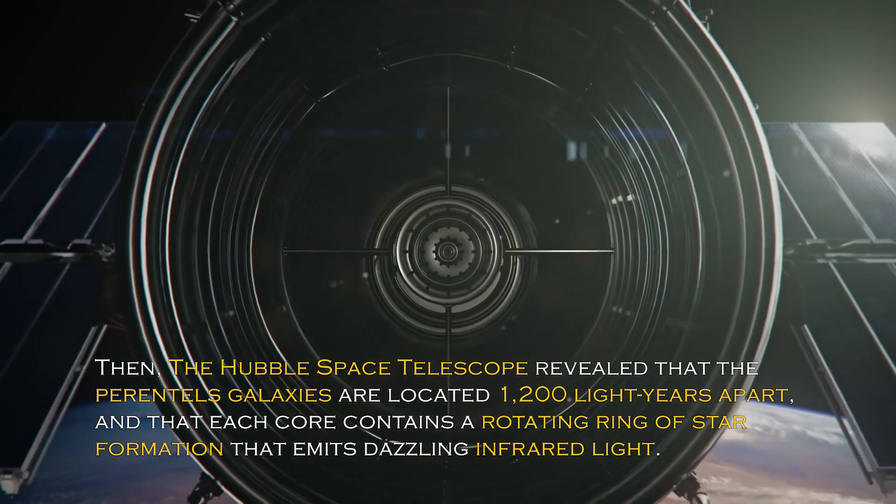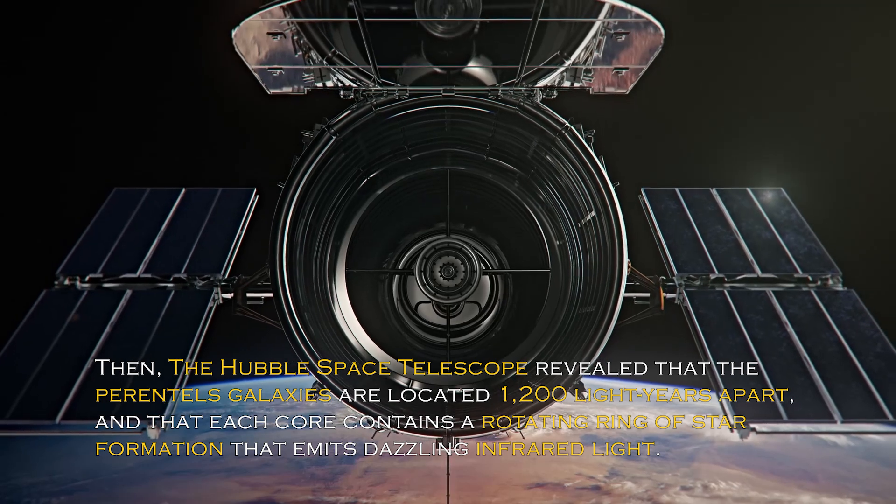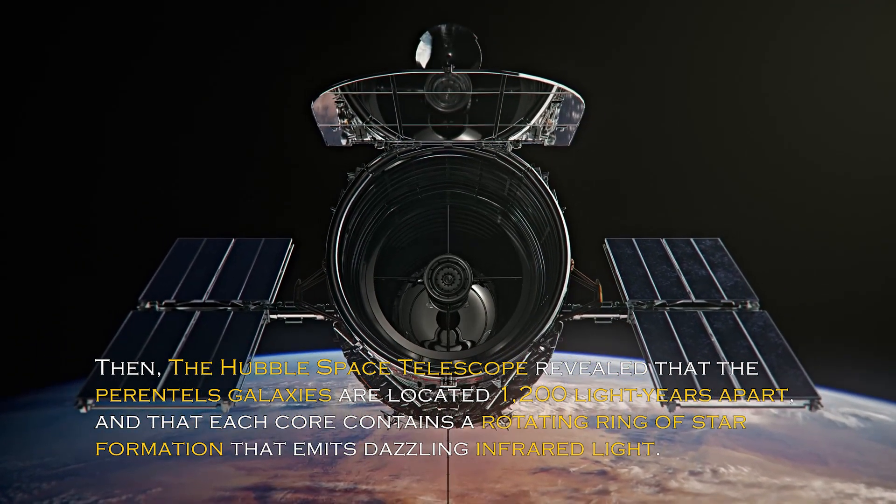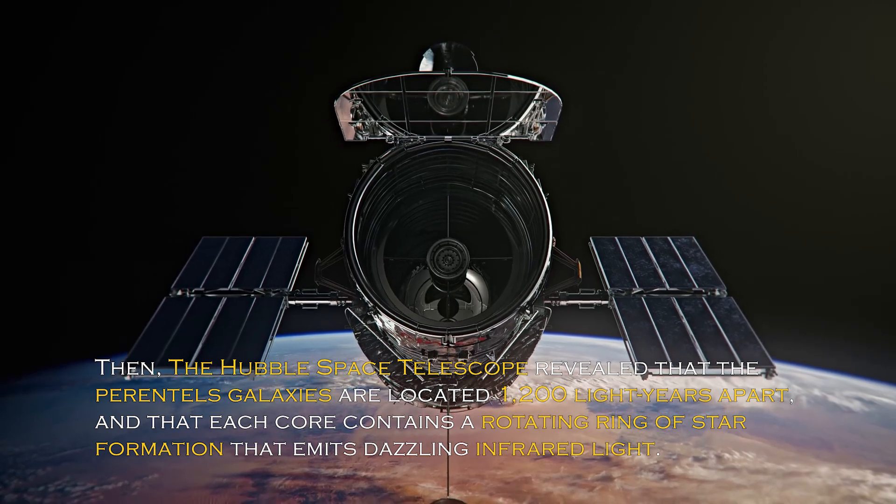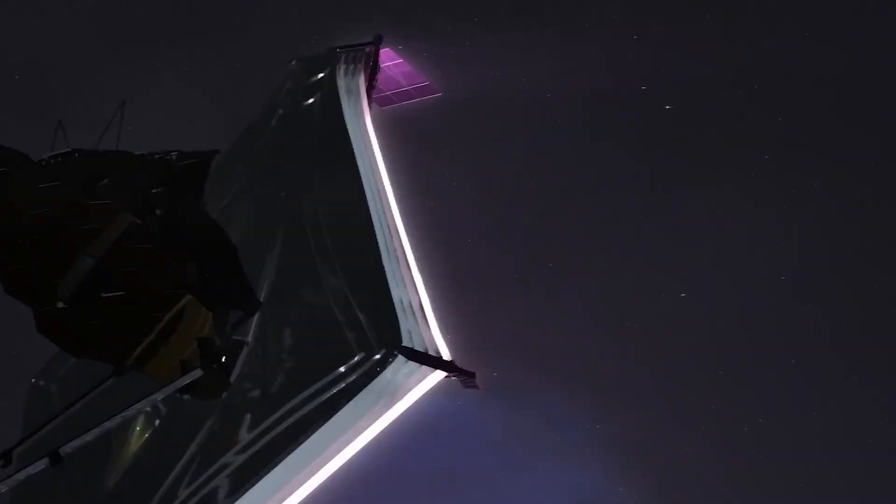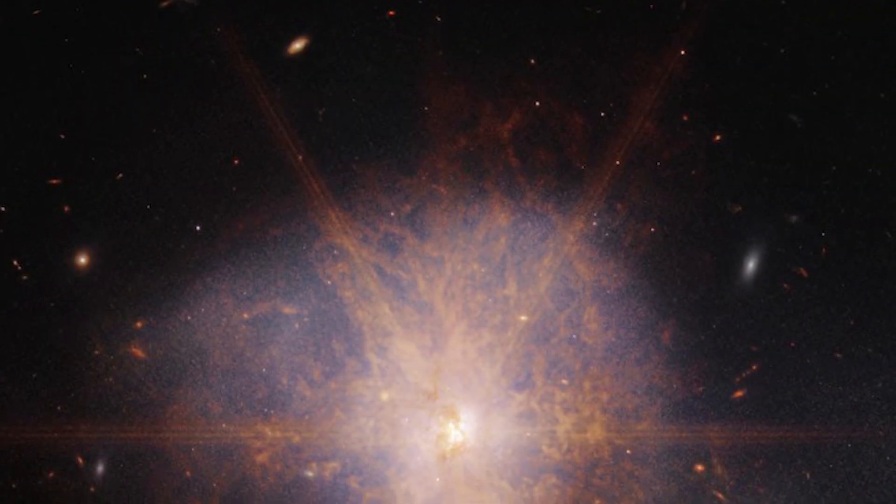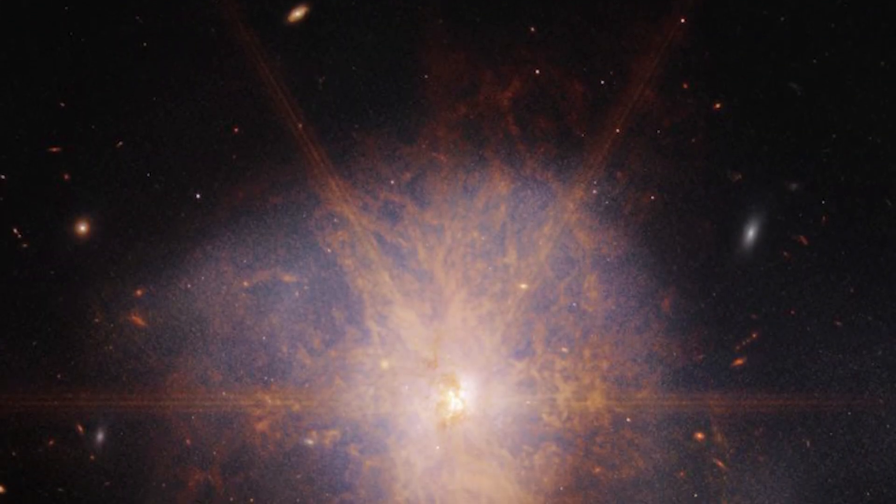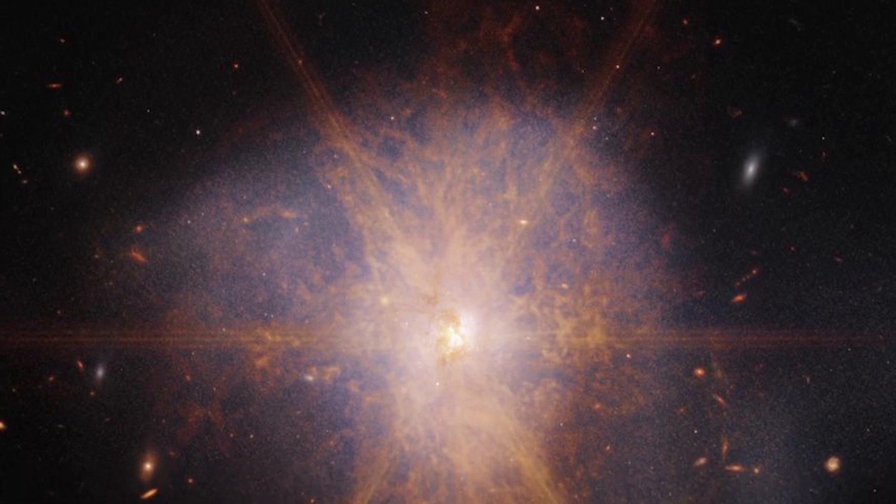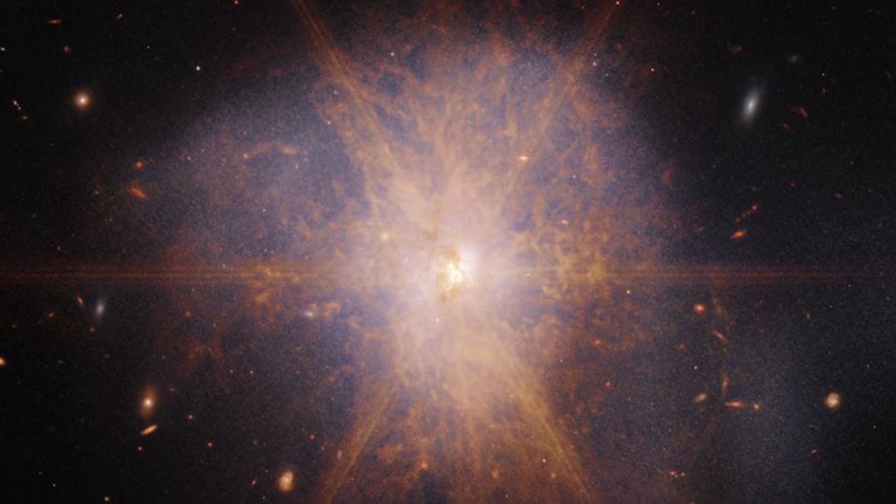Then, the Hubble Space Telescope revealed that the parent galaxies are located 1,200 light-years apart, and that each core contains a rotating ring of star formation that emits dazzling infrared light. The latest views from the James Webb Space Telescope show an impressive galactic merger of the two galaxies. This image also shows faint tidal tails extending from the outskirts of the merger, indicating the gravitational pull between the two galaxies.